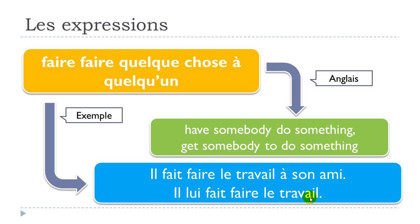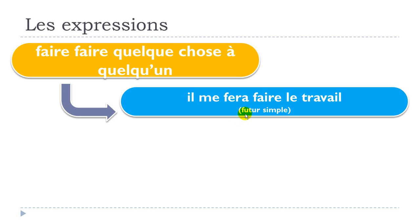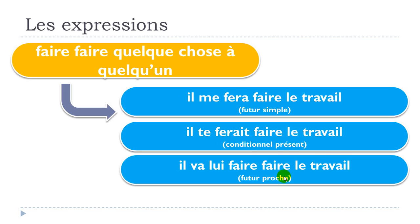Let's see how we could put this expression at different tenses and also use the pronouns. For the future simple form, with the first person singular, it's: il me fera faire le travail. As usual, we only conjugate the first faire and the second one stays at the infinitive form. For the conditionnel présent with the second person, tu: il te ferait faire le travail.